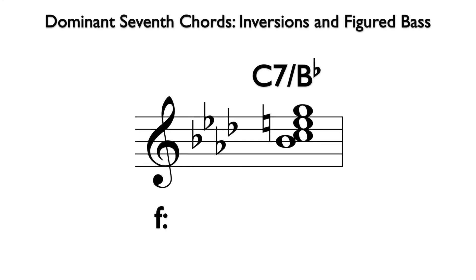Last, here is C7/Bb, the third inversion dominant seventh in F minor. The typical figure is 4-2; however, the E natural that is a fourth above the bass is altered from the key signature. To indicate this alteration, we use a natural sign next to the 4. Note that any accidental can be used in a figure to alter the notes of a chord, and they will all work in the same manner described in this video.